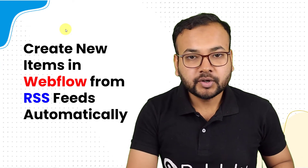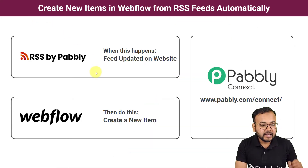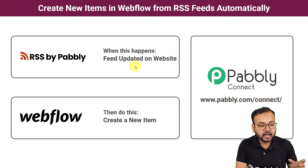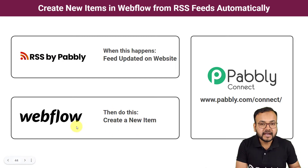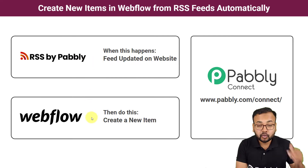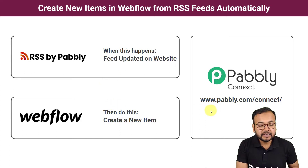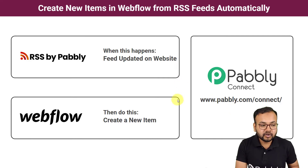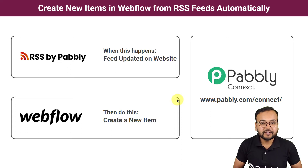Let me show you how this is going to work. As and when an RSS feed gets updated on any website, the same RSS feed will be created as a new item in your Webflow website automatically. You need not copy the link, the data, or the titles of RSS feeds from a different website and then paste them on your own website. This is going to happen automatically using Pabbly Connect, which is an integration and automation tool. The best part is that you will not require any coding skills or programming knowledge, so anyone can set up this automation very easily.